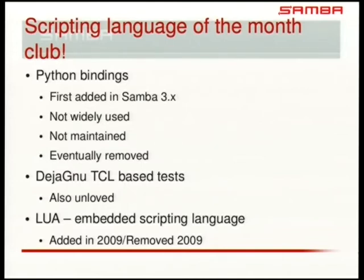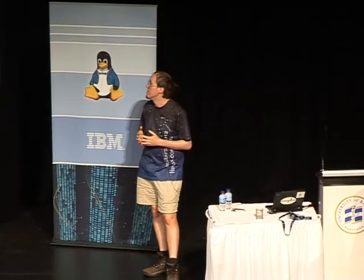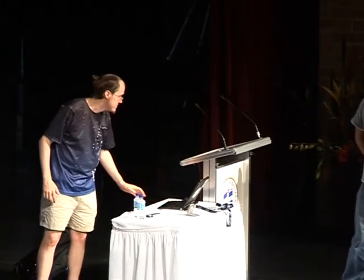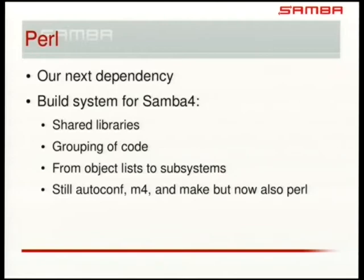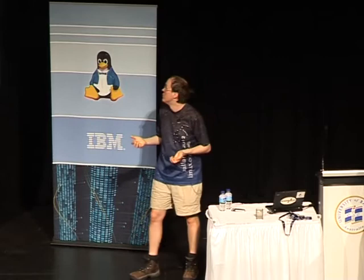We even had LUA, which has been one of the more popular embeddable languages. It was added into Samba in 2008 and removed in 2009. It was hoped it could be used for asynchronous programming to handle our WinBind stuff, but it didn't make it. But the next big dependency we decided we could actually rely on was Perl. As the Samba 4 project started to take an aggressively different direction, we decided Perl — it's not everywhere, it's not on the most ancient of systems — but we can probably assume Perl and it won't be too bad.